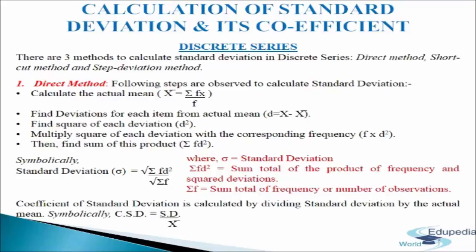Symbolically, standard deviation equals the square root of sigma fd square divided by sigma f. Where sigma fd square equals the sum total of the product of frequency and squared deviations, and sigma f equals the sum of total frequency or number of observations. The coefficient of standard deviation is calculated by dividing standard deviation by the actual mean. Symbolically: CSD equals SD divided by mean, where SD stands for standard deviation.